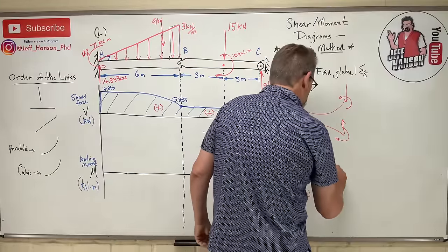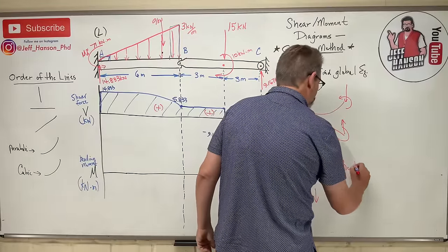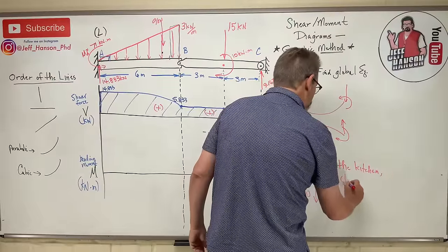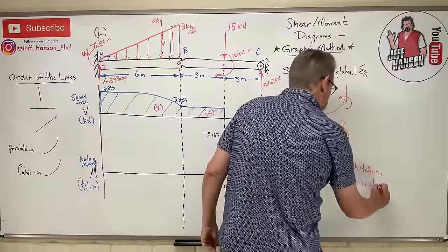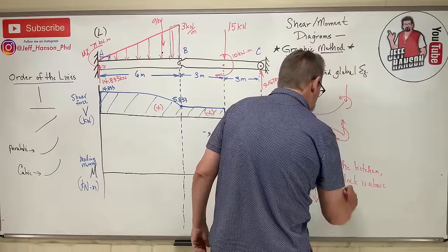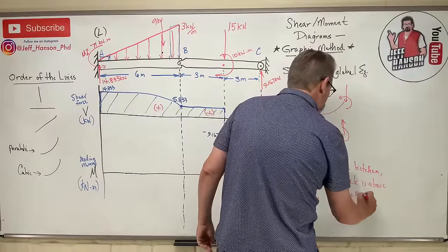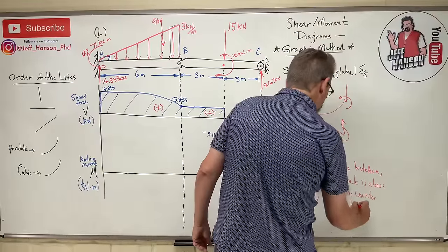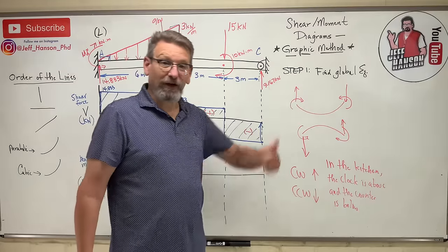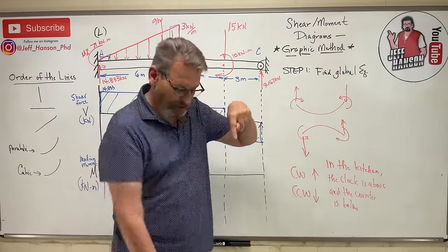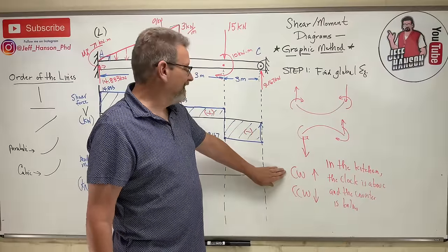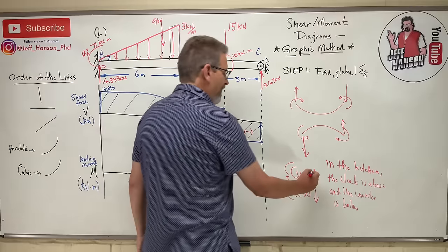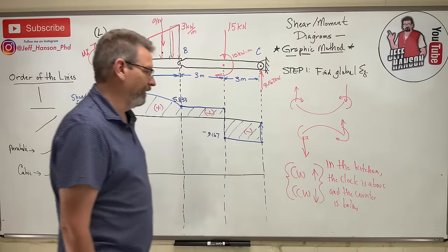To remember which direction concentrated moments go on the M diagram: clockwise moments go up, counterclockwise go down. Here's the mnemonic: in the kitchen, the clock is above and the counter is below. Nobody has a clock on the counter! So clockwise → up on the graph, counterclockwise → down.